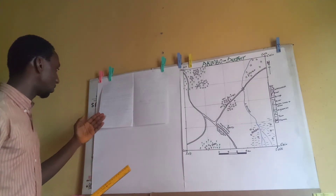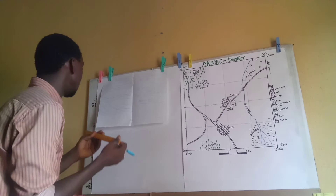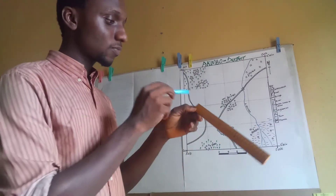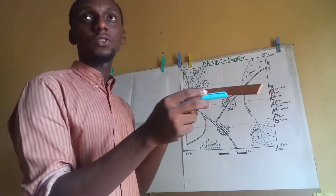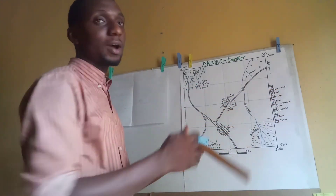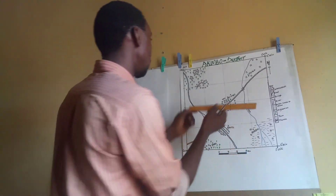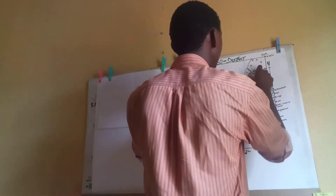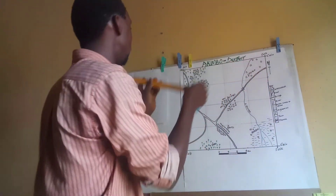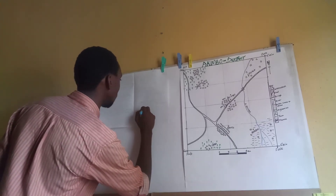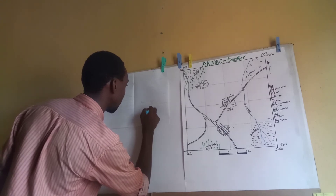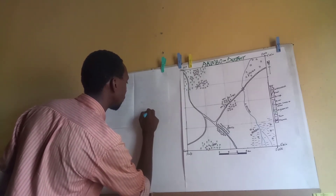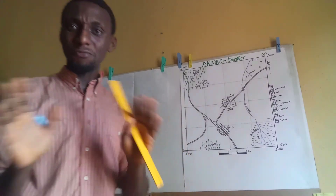Step number four says: using your ruler, measure the length of the line drawn in step three. Be sure you are using the centimeter side of the ruler — do not use the inches side, as our scale is already in centimeters. Place your ruler along the line, zero to the starting point, and read to the other end. What do you have? I have 25 centimeters. So the length of the line from Dengue to Kasala is 25 centimeters.